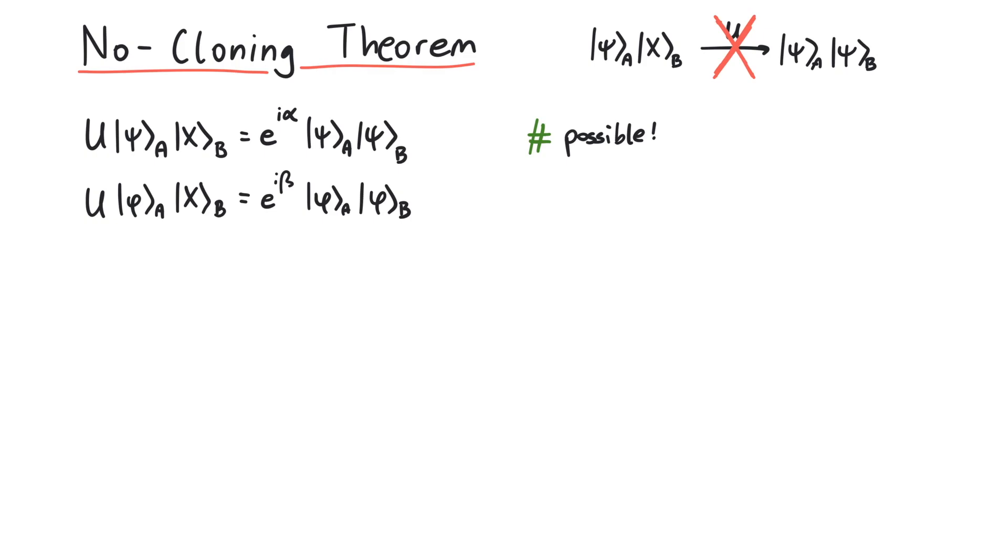To start the proof, we need to calculate the Hermitian conjugate of the second equation. This means the kets become bras, U will be U dagger, and the phase factor picks up a minus sign.